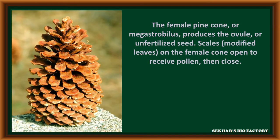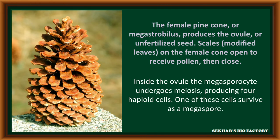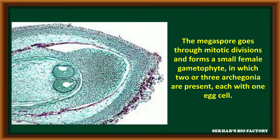The female pine cone or megastrobilus produces the ovule or unfertilized seeds, and scales on the female cone open to receive pollen grains. Inside the ovule, the megasporocytes undergo meiosis division and form four haploid cells. One of these survives as a megaspore. The megaspore undergoes mitosis division to form a small female gametophyte, in which two or three archegoniums are present. Each archegonium consists of one egg cell.